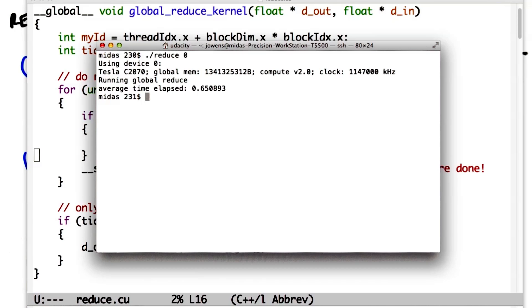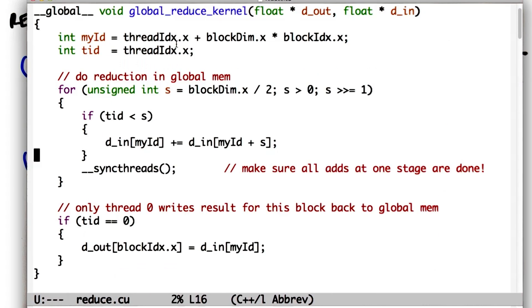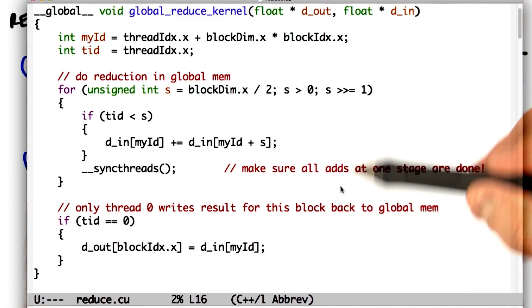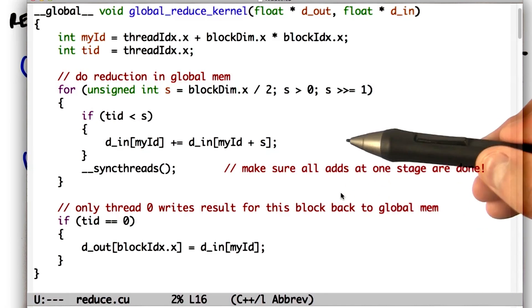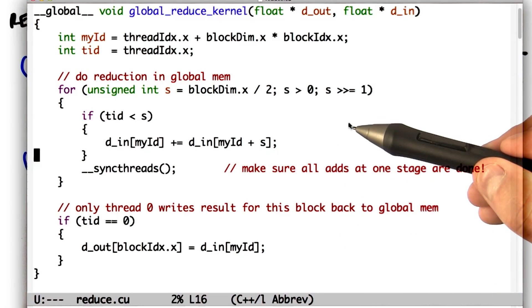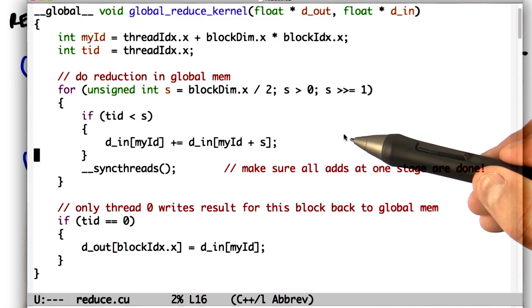But it's not as efficient as we might like. Specifically, if we take a look at the code again, we're going to global memory more often than we'd like. On each iteration of the loop, we read n items from global memory and write back n over 2 items. Then we read those n over 2 items back from global memory, and so on.